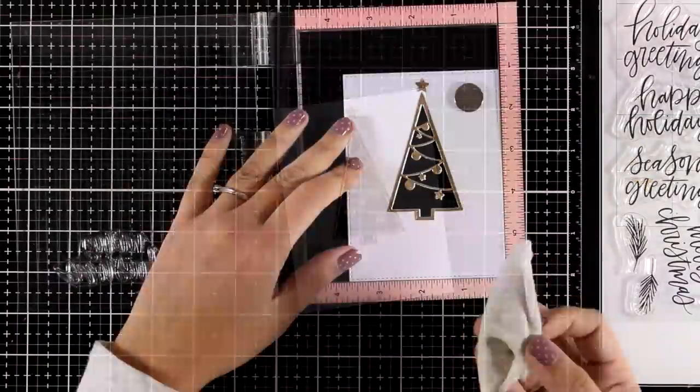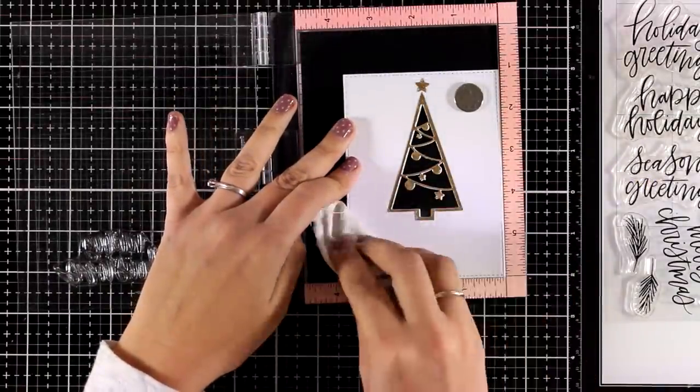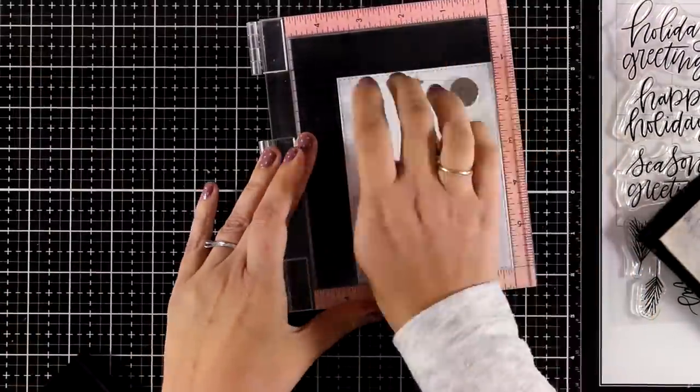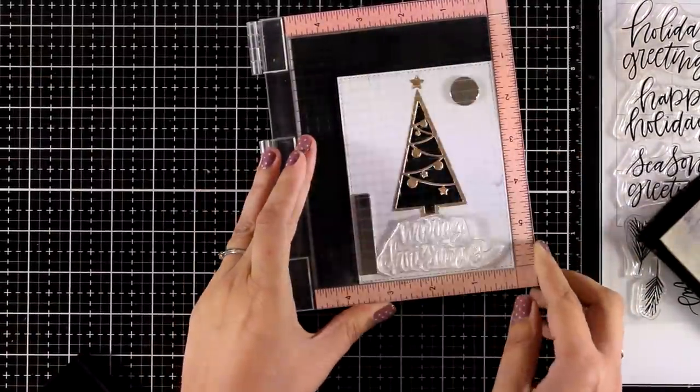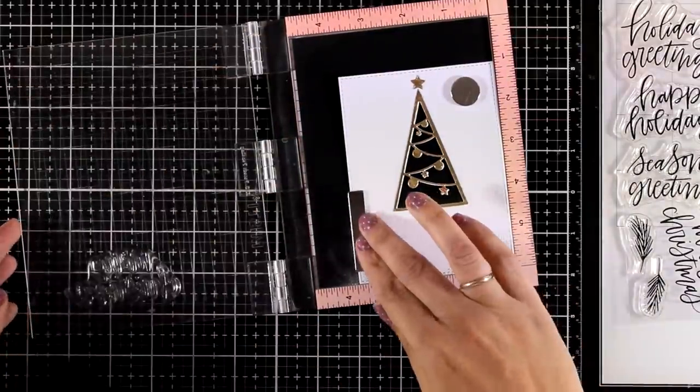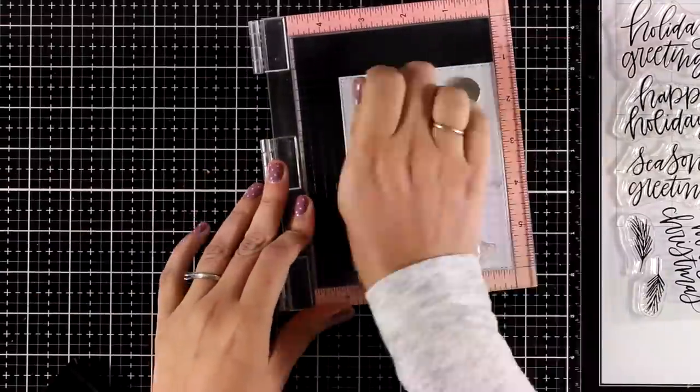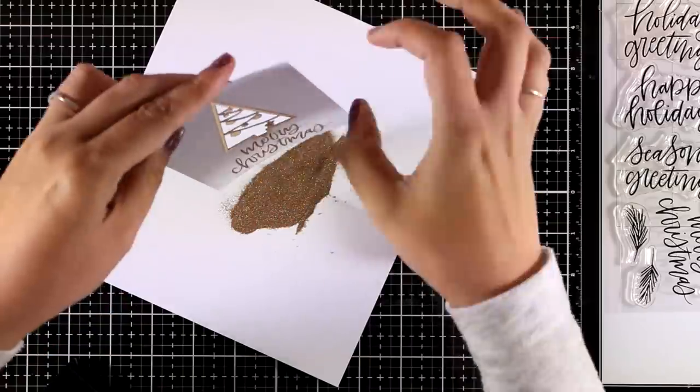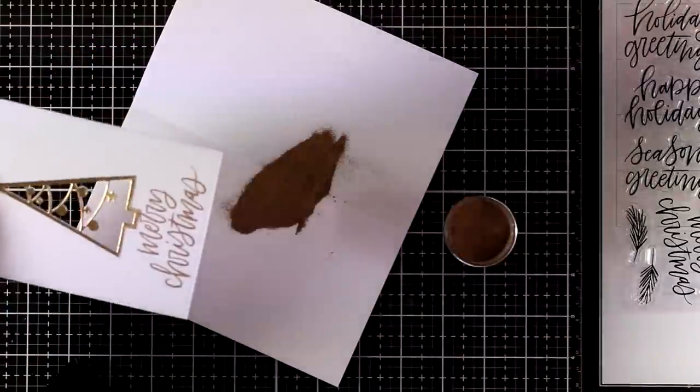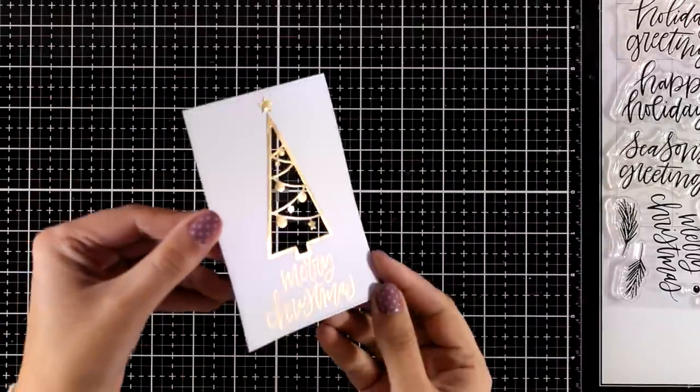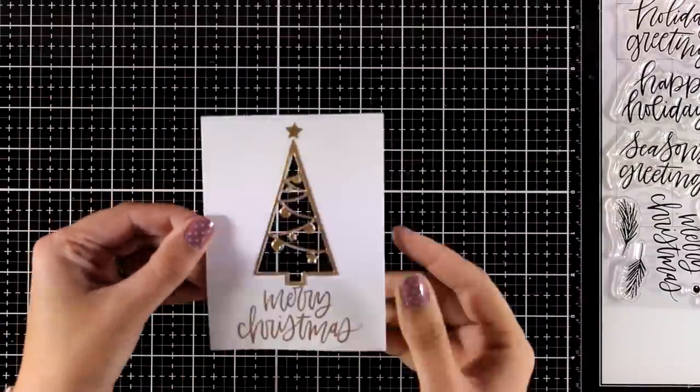Now it's time to stamp the sentiment at this stage before I turn it into a shaker card. For that I am going with Merry Christmas from a beautiful handwritten stamp set which is called Hand-lettered Holiday Greetings and this is from the previous release by My Favorite Things which means that it's on sale. Now I am going to stamp that with Versamark and then apply gold embossing powder, heat set everything and you can see now how beautiful it matches with the border of my tree.